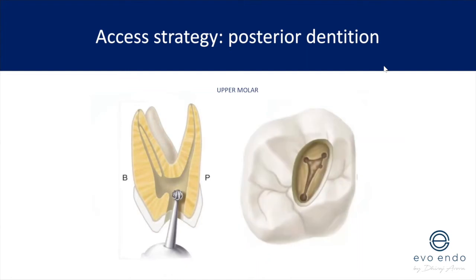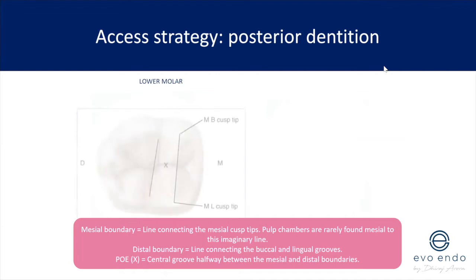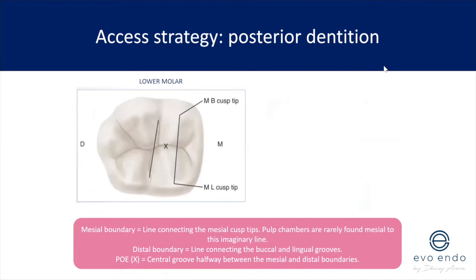A common mistake is not fully de-roofing the pulp chamber — make sure you do. You can use an ultrasonic unit, a safe-ended bur, or if you don't have those, use a large rose-head bur on the outward stroke to de-roof the pulp chamber. Lower molars: the mesial boundary is exactly the same — the line connecting the mesial cusp tips. The distal boundary is the line connecting the buccal and lingual grooves, and the point of entry is the central groove halfway between both boundaries. Access strategies for upper and lower molars are fairly similar.